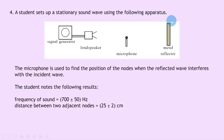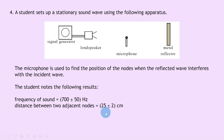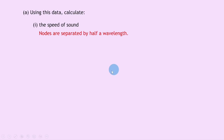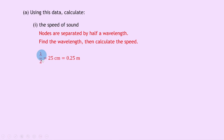Question 4 describes a student setting up a stationary sound wave using a loudspeaker connected to a signal generator, a microphone, and a metal reflector. The microphone is used to find the positions of the nodes where the reflected wave interferes with the incident wave. The student records the frequency as 700 ± 50 Hz and the distance between two adjacent nodes as 25 ± 2 centimeters. Part 1 asks to calculate the speed of sound. Since nodes are separated by half a wavelength, lambda over 2 equals 25 centimeters.